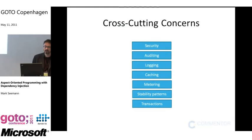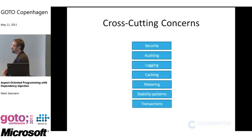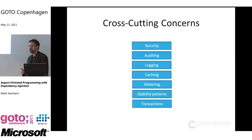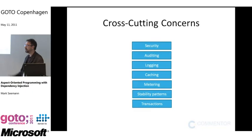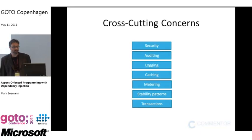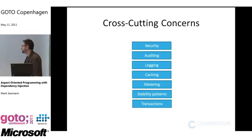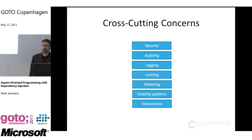In that kind of diagram, things like security, auditing, and logging are represented by those vertical bars because they don't really fit into the layering model. Cross-cutting concerns are concerns that cut across a lot of different features — a shopping basket feature, a product catalog feature, image upload, and so on. Security, auditing, and logging should be applied across all of those features.